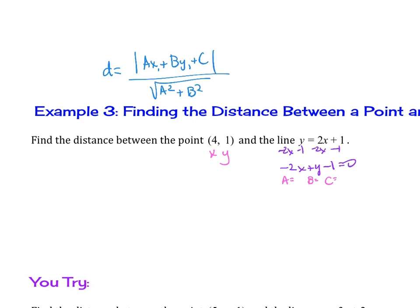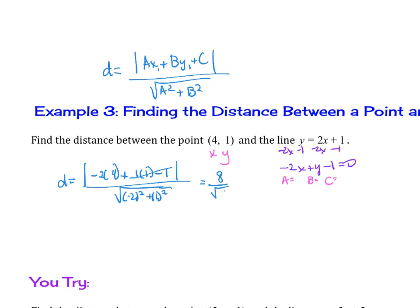Substituting: absolute value of (negative 2 times 4 plus 1 times 1 plus negative 1), over the square root of (negative 2 squared plus 1 squared). Simplifying: negative 8 plus 1 minus 1 gives negative 8, so the numerator is 8. The denominator is the square root of 4 plus 1, which is root 5. So the distance is 8 over root 5, or approximately 3.58 units.